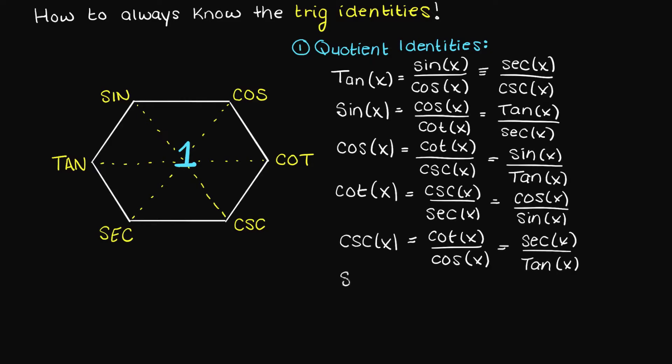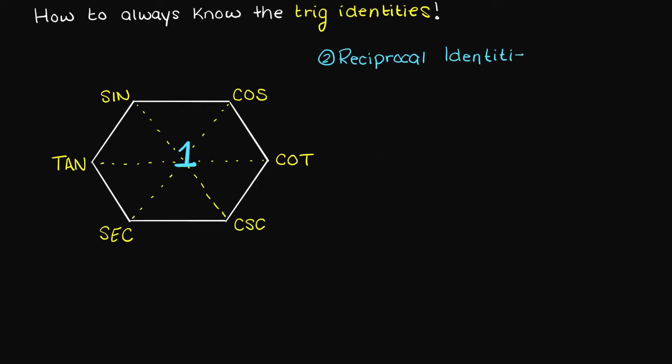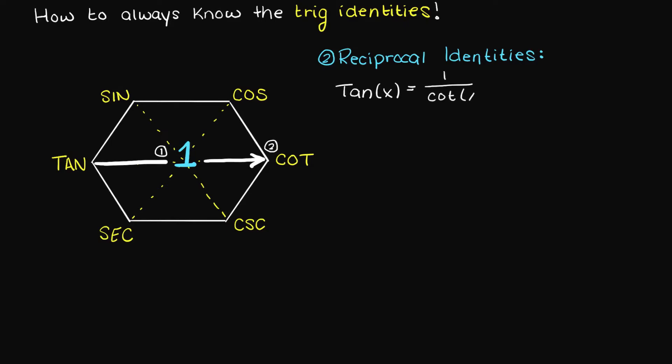If you were to look these up they are indeed the quotient identities for tangent. I'm just going to quickly perform the rest of the quotient identities to confirm this works. You may ask — what if I want the reciprocal identities? Surely I can't get those from this hexagon. Well we actually can, very easily. We get the reciprocal identities the same way as the quotient ones, except moving through the hexagon rather than around it. So for the reciprocal identity for tangent, we move through and get one over cotangent, which is indeed the reciprocal identity for tangent.